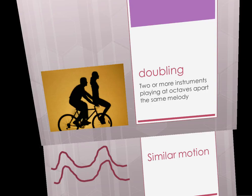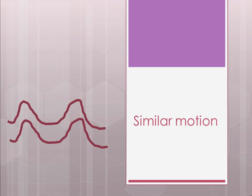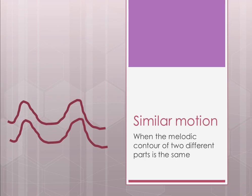Similar motion means when the melodic contour of two different parts is the same. They might start on very different notes, but they move up and down in the same shape. If you connected the notes dot-to-dot, you'd see the very same shape — like parallel lines going in the same direction without ever meeting.